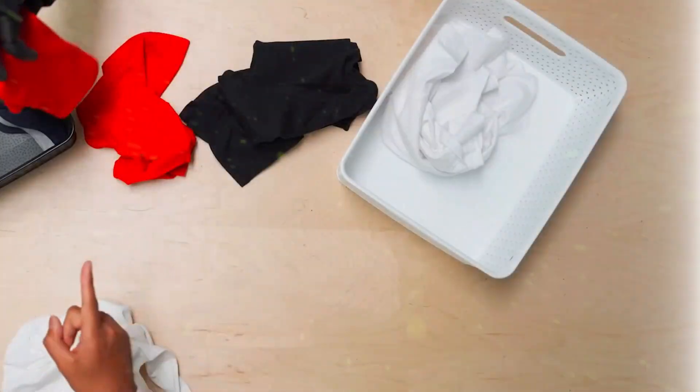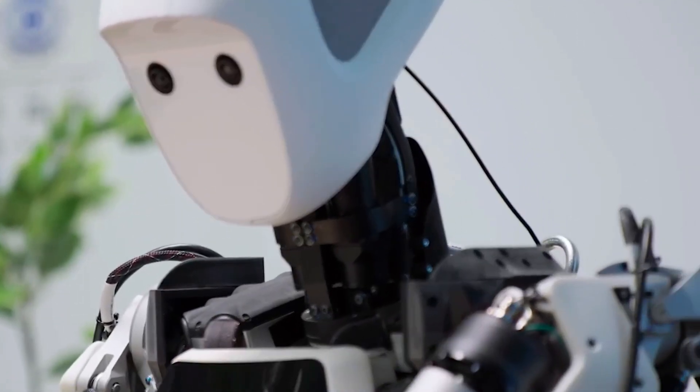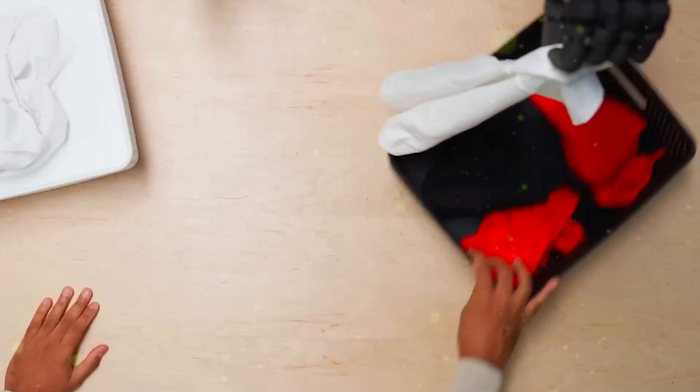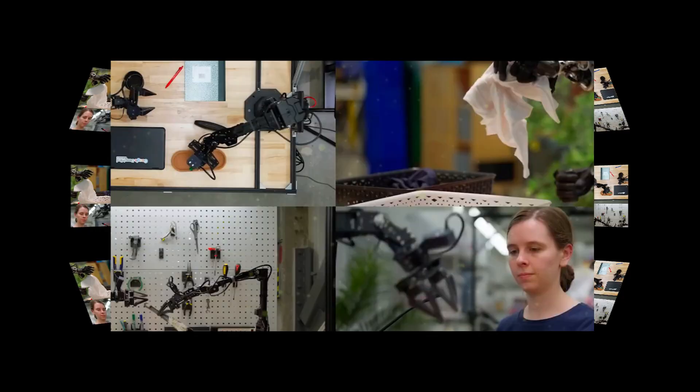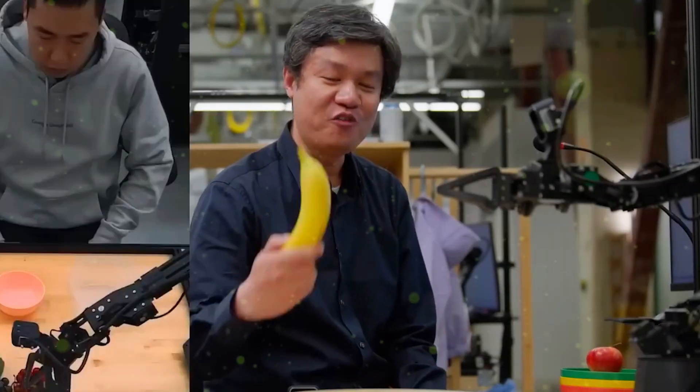Then it reached for a white cloth with its left hand, carefully adjusted the bin so it could grab it better, and kept going. Nobody told it to do that. It just figured it out on the fly. That's a level of reactivity and problem-solving that feels scarily close to how we make decisions. And it's not just laundry.